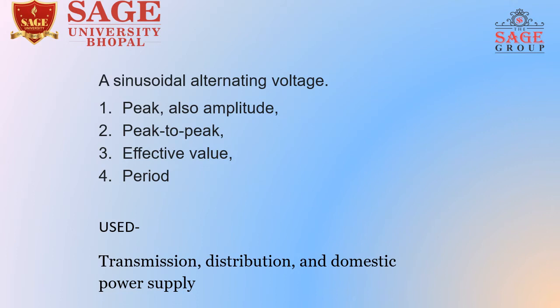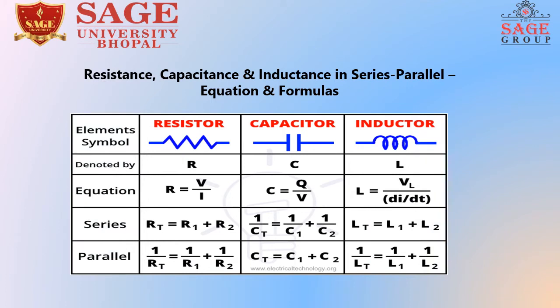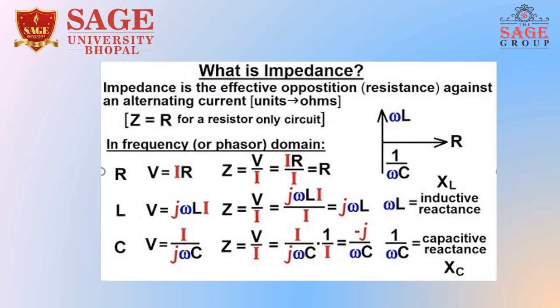The sinusoidal alternating voltage is used in transmission, distribution, and domestic power supply. Here we use resistance, capacitance, and inductance in series and parallel equations and formulas. The resistor is denoted by R, capacitor by C, and inductor by L (noted as R in the slide). The equations are: R equals V by I; C equals Q by V; and IL equals VL times d by dt. Series and parallel combination equations for resistance, capacitance, and inductance are also shown.